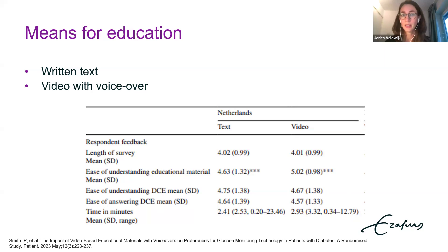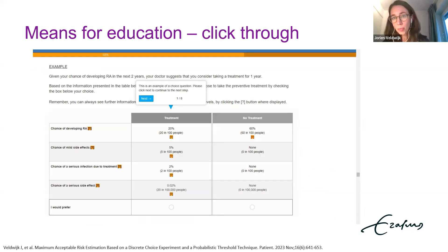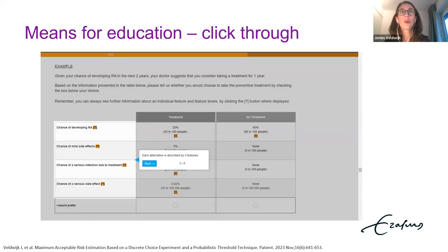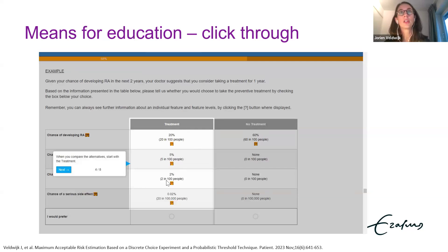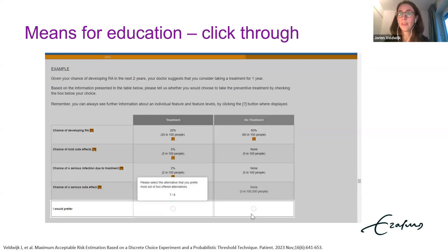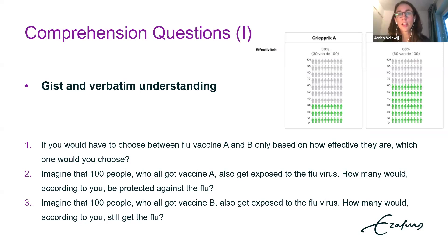That does not mean that video or game-like material are ineffective as a whole; however, they should be very carefully tailored to the respondent population. Alternatively, surveys can use a click-through example, as we did in a previous study on RA prevention where we showed the choice task: every time you choose between taking a treatment or not, four features describe the alternatives, a treatment alternative has different levels for these features, and there's a no-treatment alternative with your choice indicated at the bottom.